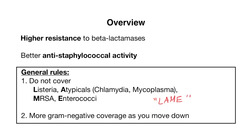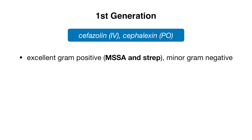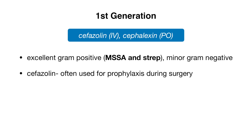As you move down generations from first to fifth, you'll generally have more gram-negative coverage. Starting with first generation cephalosporins — cefazolin and cephalexin — these antibiotics have excellent gram-positive coverage, particularly for staph and strep, but not MRSA. They also offer some minor gram-negative coverage. Cefazolin is often used for surgical prophylaxis because it covers the more common organisms found with surgical skin infections.